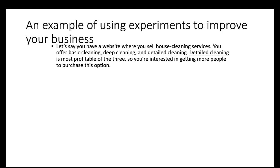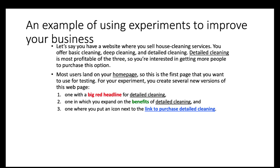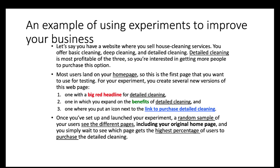Here's an example of using experiments. Say you have a website selling house cleaning services — basic, deep, and detailed cleaning — and the detailed cleaning is the most profitable, so you want more people to purchase it. Most users land on your home page, so that's the first page you want to use for testing. You can create several new versions: one with a big red headline for detailed cleaning, one that expands the benefits of detailed cleaning, and one that puts an icon next to the link to purchase detailed cleaning.